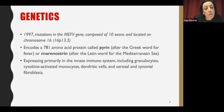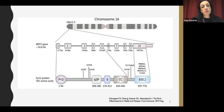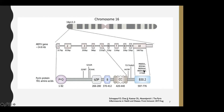This protein is expressed primarily in innate immune system cells, including granulocytes, cytokine-activated monocytes, dendritic cells, and serosal and synovial fibroblasts. This is the schematic representation of the Mediterranean fever gene and the encoded pyrin protein. The most common FMF-associated mutations are located in exon 10, which encodes the B30.2 domain of the pyrin protein.